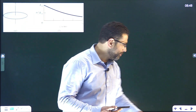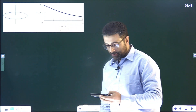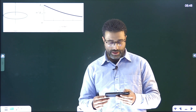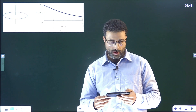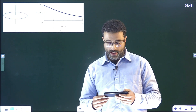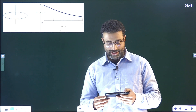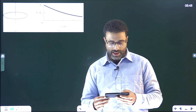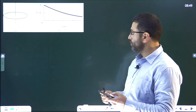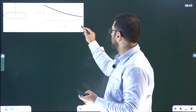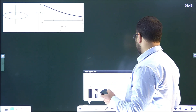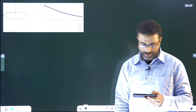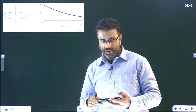So let me read out the problem. We have a diagram also here. Figure A shows a circular disk that is uniformly charged. The central z-axis is perpendicular to the disk face with origin at the disk. Figure B gives the magnitude of the electric field along that axis in terms of the maximum magnitude E_m at the disk surface. The z-axis is set by z_s equal to 8 centimeters. What is the radius of the disk?